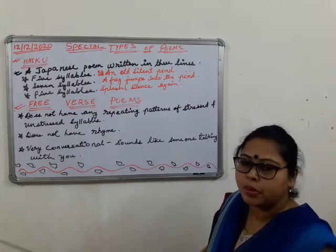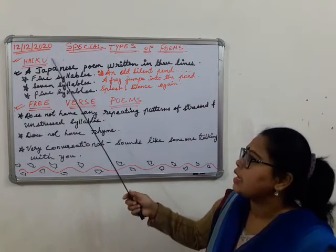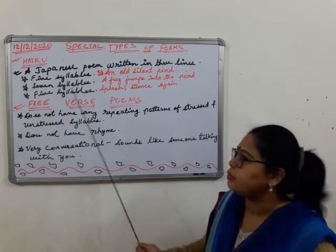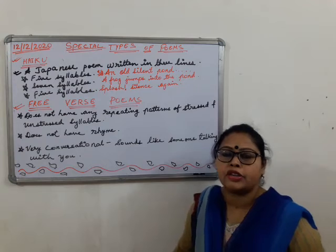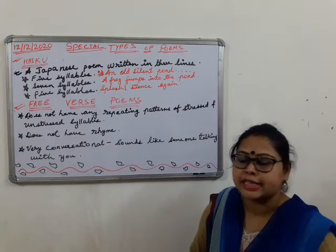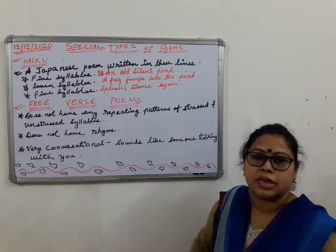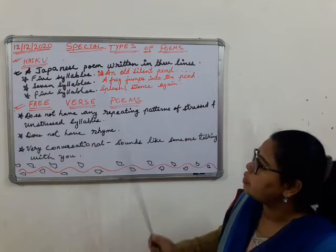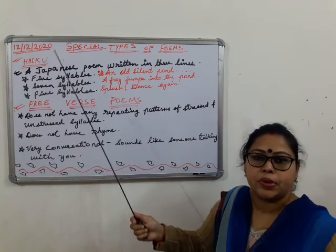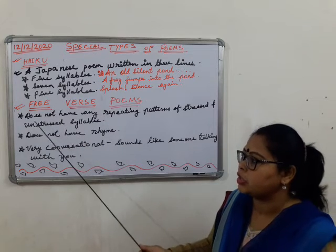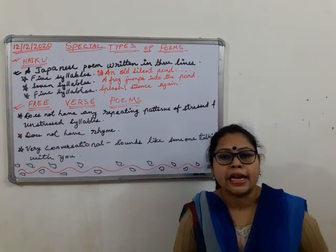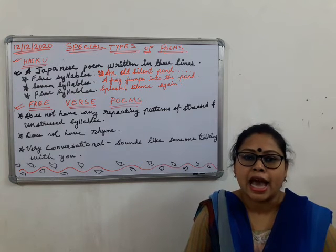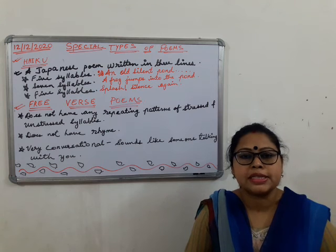So in this special types of poems, we discussed two poems: haiku and free verse poem. Hope you all understood these two types, which come under special types of poems. If you are asked in your exams what poem has only three lines, you can say it's haiku. If you have any doubts, you can ask me and I will help you out. Thank you very much, and be safe at home.